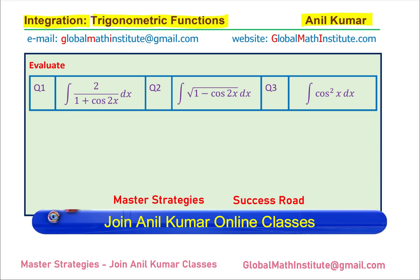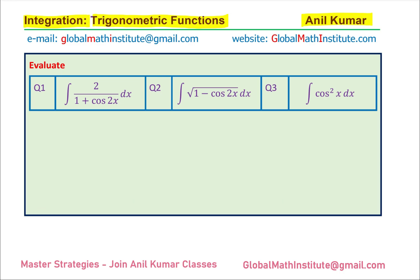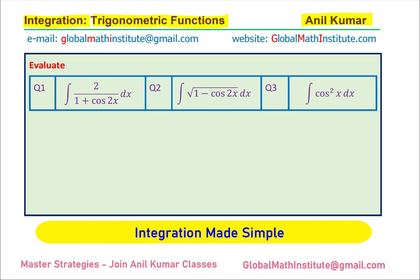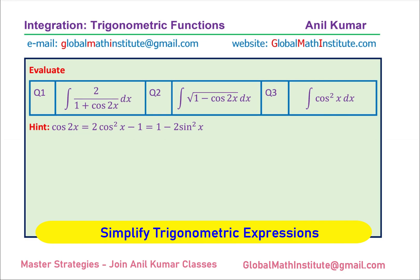We have three questions. Question number 1: integrate 2 over 1 plus cos2x dx. Question 2: integrate the square root of 1 minus cos2x dx. And then we need to evaluate the integral of cos²x dx. For all three of them, the double angle formula is required to simplify the given expression.